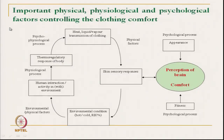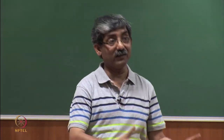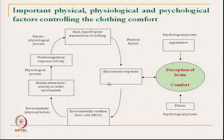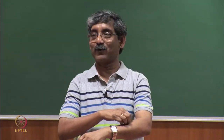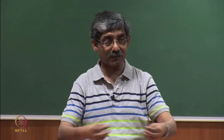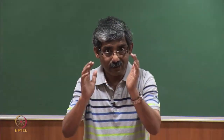Next is the psychophysiological process — the different sensations we get and heat and moisture transmission. Different physical factors like heat, moisture transmission, and air transmission directly or indirectly affect our comfort sensation. Another important factor is skin sensory sensation — whether the touch gives a harsh feeling or soft feeling. All this sensation — environmental, physical, or physiological — is received by different sensors in our body, which ultimately send the signal to the brain, and the brain perceives the sensation.